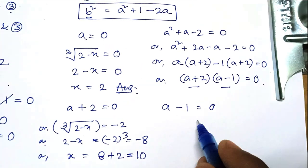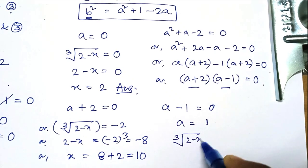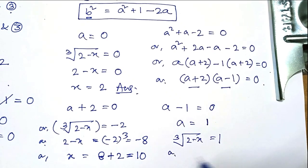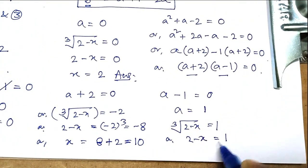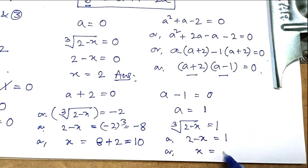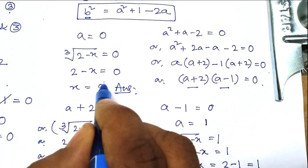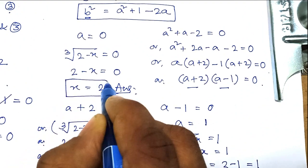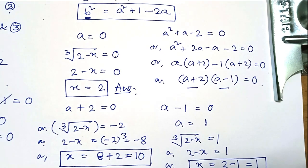For the third solution, a minus 1 equals 0, so a equals 1. Since cube root of (2 minus x) equals 1, cubing both sides gives 2 minus x equals 1, so x equals 2 minus 1, which is 1. Together we have three solutions for x: x equals 2, x equals 10, and x equals 1.